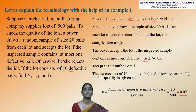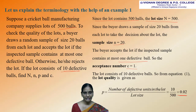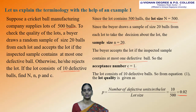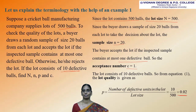So you have learned about the terms such as lot, lot size, lot quality, sample, sample size, etc. You may like to know how we can be confident that a lot of good quality will be accepted and a lot of bad quality will be rejected. We can answer such questions by calculating the probability of accepting a lot of specified quality. The probability of accepting the lot is denoted by Pa(p), or simply Pa.